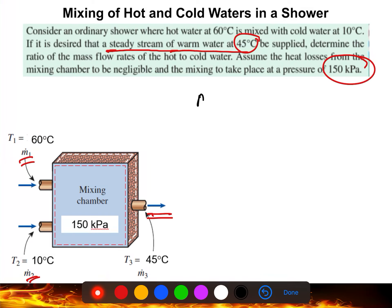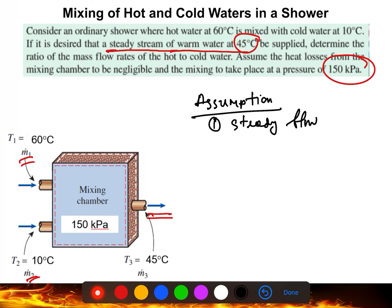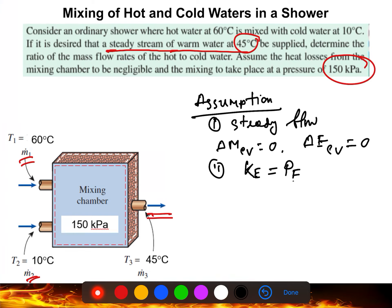Let's state the assumptions. First, this is a steady flow problem, which means no change in mass or energy inside the control volume: ΔmCV = 0 and ΔeCV = 0. Second, kinetic energy and potential energy changes are negligible — not exactly zero, but very small.